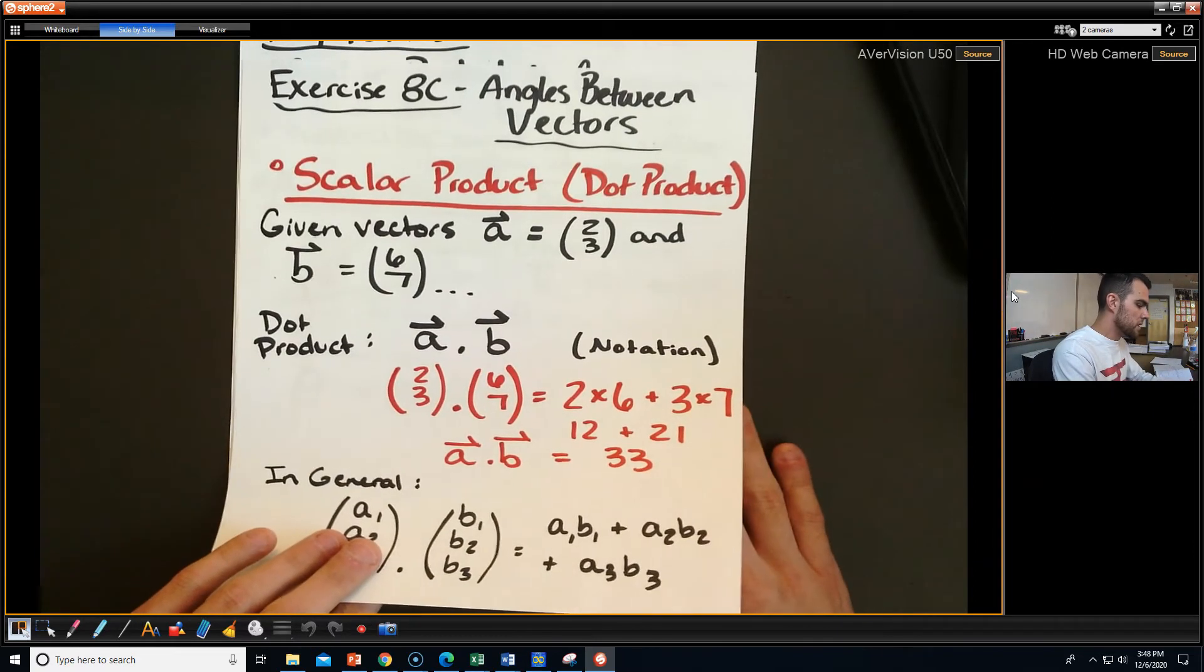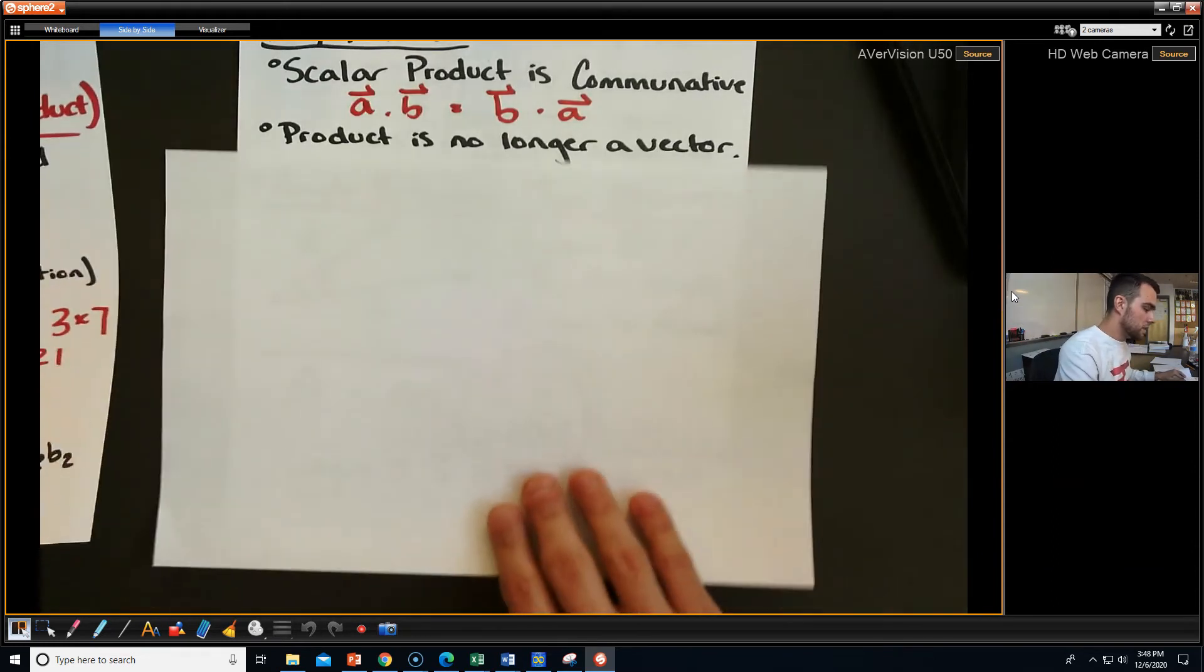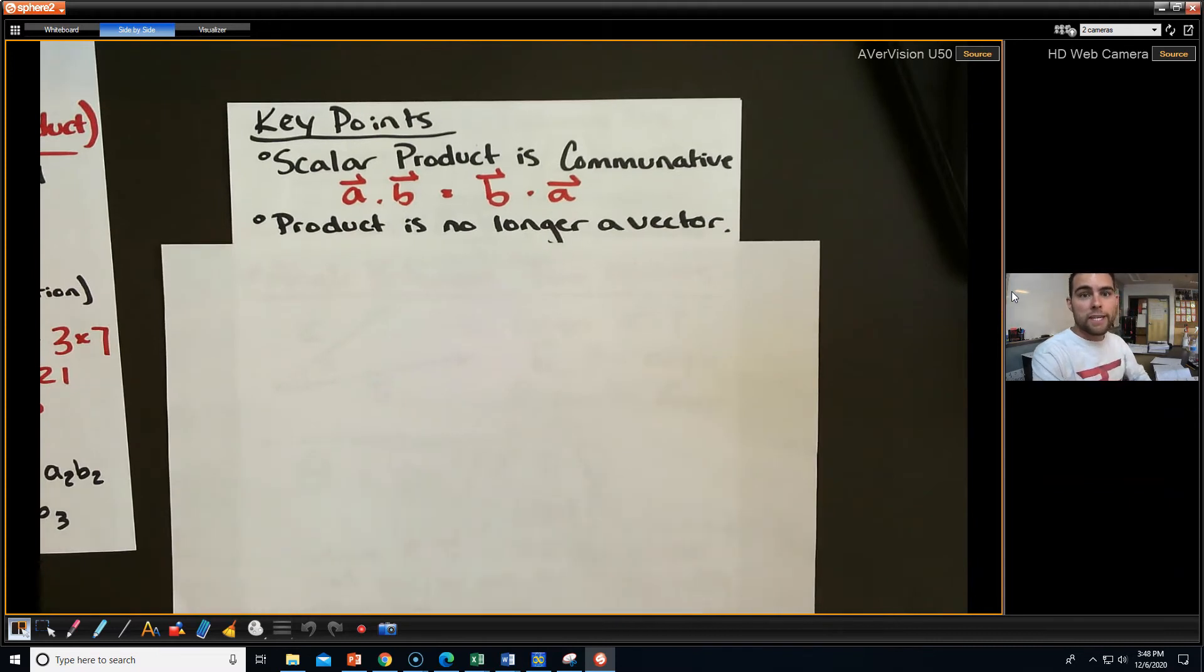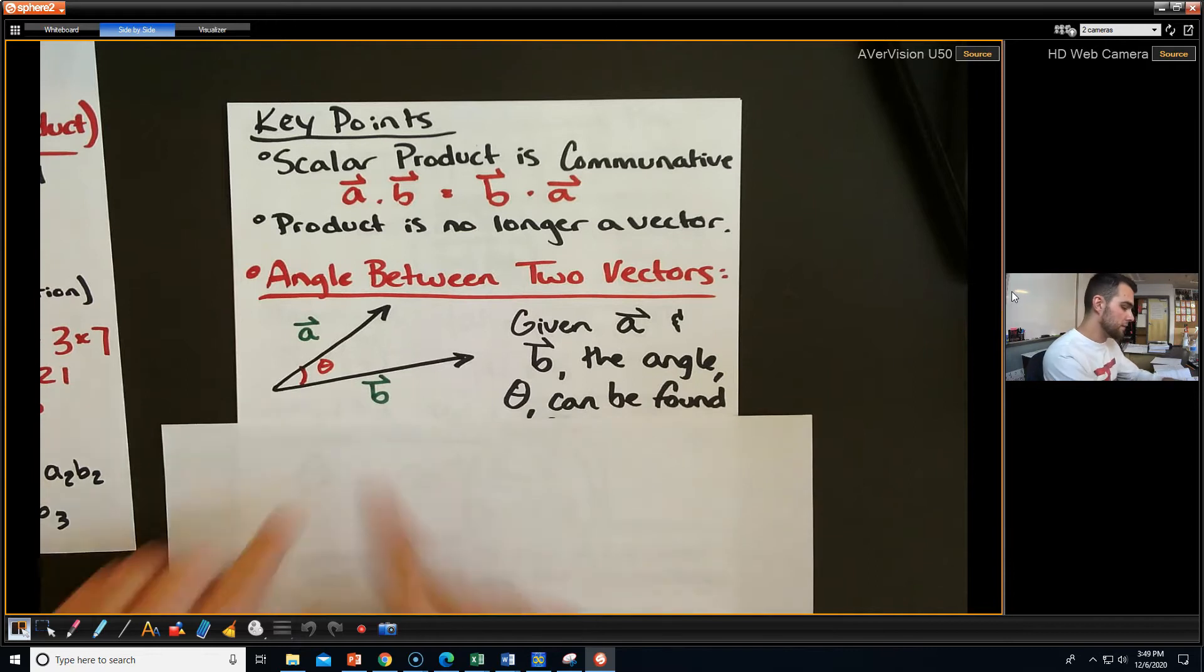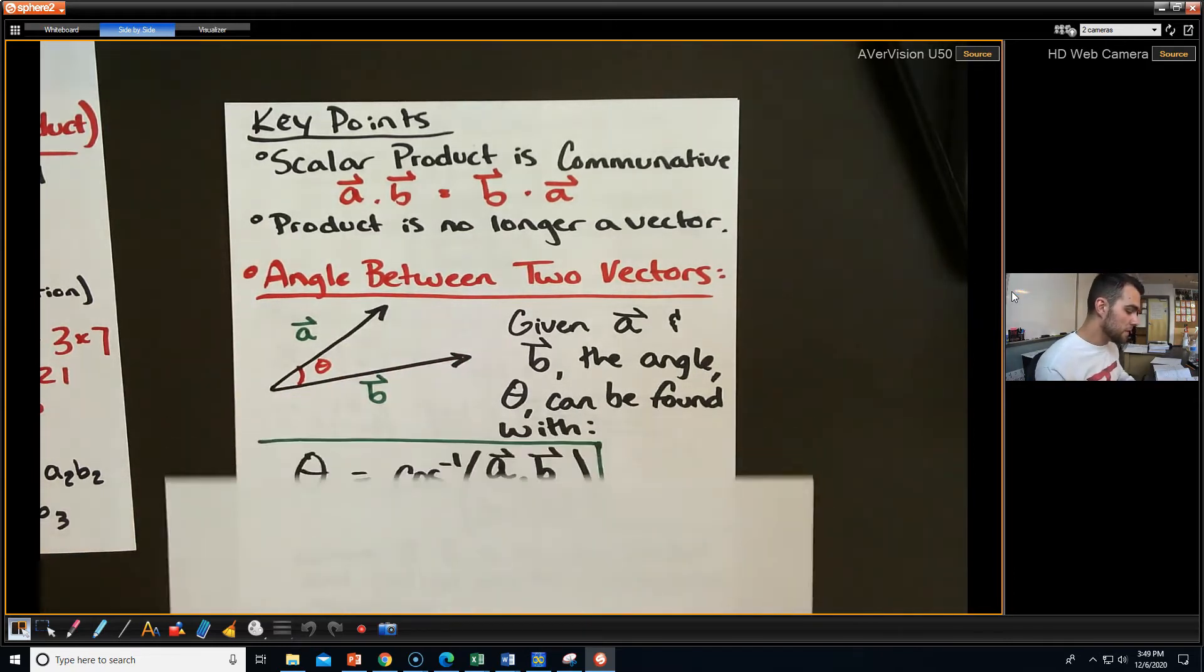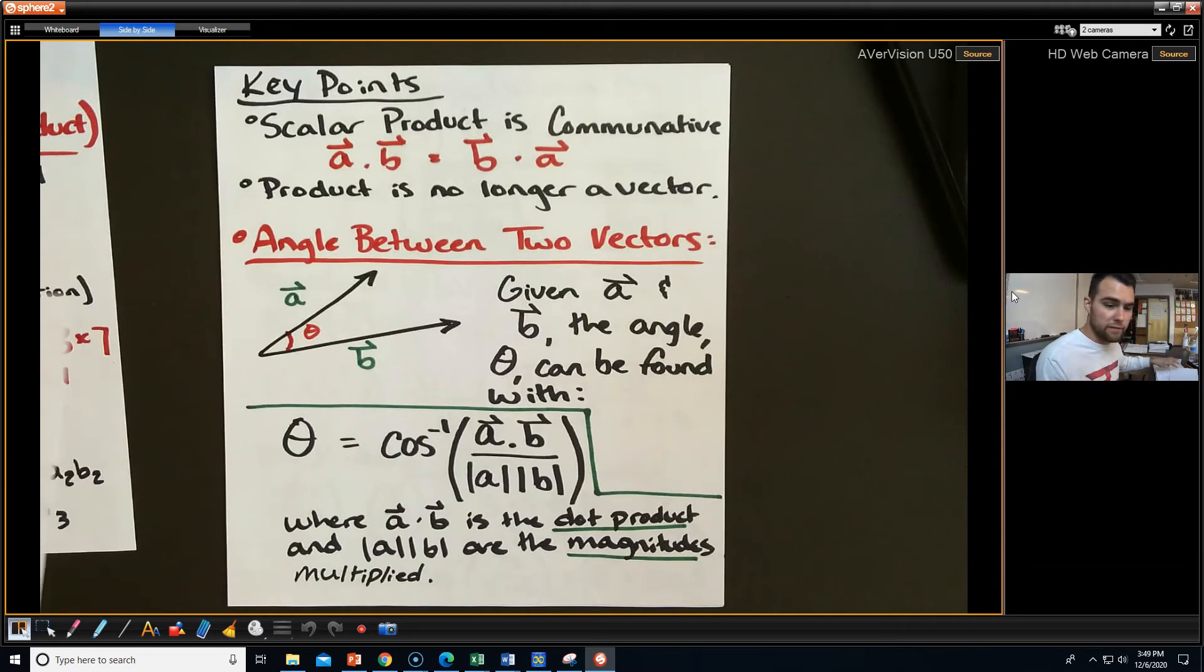The reason they call it a scalar product is because it is no longer a vector. It is just some kind of value, hence scalar product. The scalar product is commutative, meaning you can switch which comes first in multiplication. To actually find the angle between two vectors, it can be found with this disgusting formula. Theta is going to be equal to the arc cosine of the dot product of A to B over the magnitude of A times the magnitude of B. There's quite a bit going on here. We have to get the dot product and the magnitudes figured out to use this formula effectively.